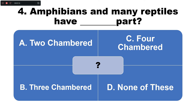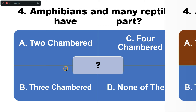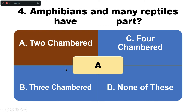Question number four: Amphibians and many reptiles have how many chambers in their heart? Option A: two chambers, B: three chambers, C: four chambers, D: none of these. The answer given is option A — two chambers.